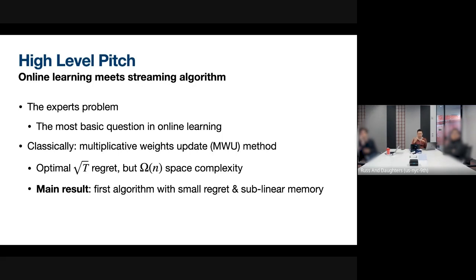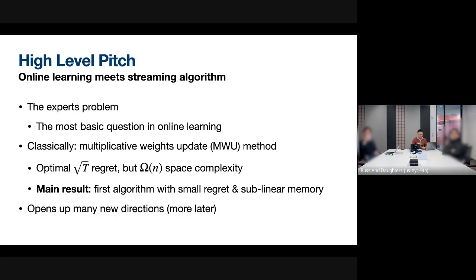We're really trying to look at this problem from the perspective of a data streaming problem, when the algorithm has limited space. The classic algorithm for solving regret minimization in online learning is the multiplicative weights update method, and this method has to keep track of the entire weight distribution of all experts. Therefore, with a large number of experts N, the space complexity may be high. Today, we're going to see a new result that achieves small regret — little O(T) — in sublinear memory without using Omega(N) memory.